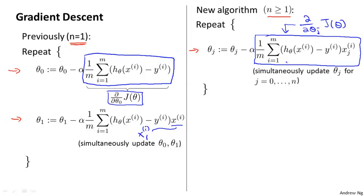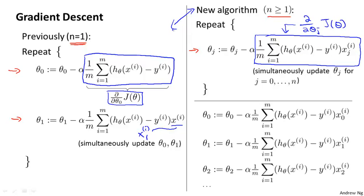The last thing I want to do on this slide is give you a sense of why these new and old algorithms are sort of the same thing, or why they're both similar algorithms or why they're both gradient descent algorithms. Let's consider a case where we have two features or maybe more than two features. So we have three update rules for the parameters theta 0, theta 1, theta 2, and maybe other values of theta as well.